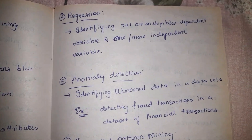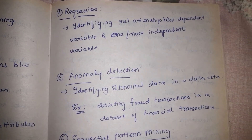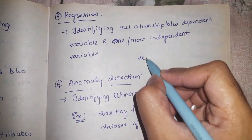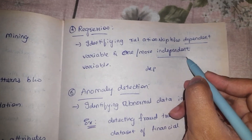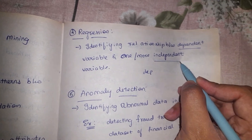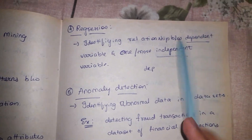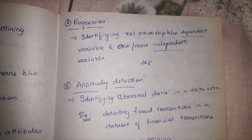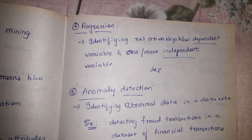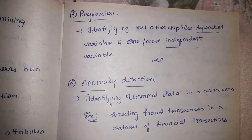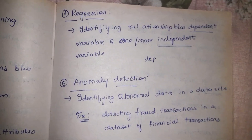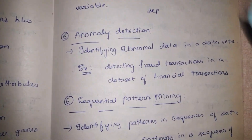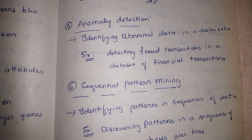Another functionality is regression. Regression involves two terms: a dependent variable and an independent variable. Regression identifies the relationship between the dependent variable and the independent variable. Those not depending on any other variable are referred to as independent variables.